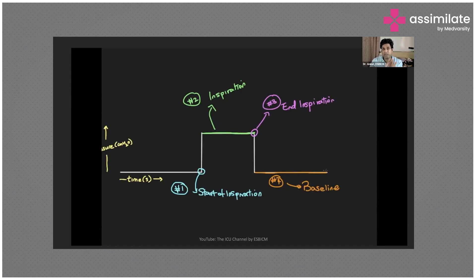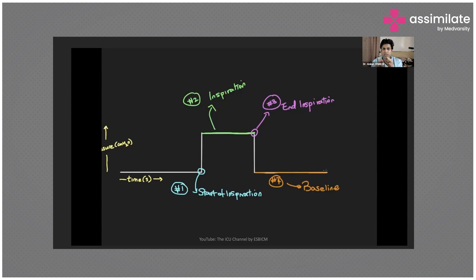The ventilator is a machine with no mind. Something has to tell the ventilator to give a breath to the patient — that is the trigger. At the end of inspiration, something tells the ventilator to stop inspiration so that exhalation, which is a passive process, can follow — that is the cycle. In between the trigger and the cycle, there is a pattern by which the ventilator delivers the breath, called the target or limit. So the whole ventilator game revolves around three variables: trigger, target or limit, and cycle.